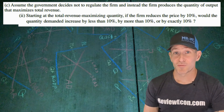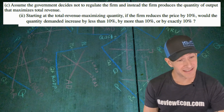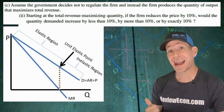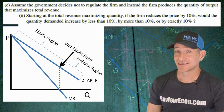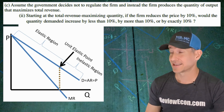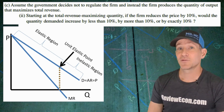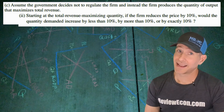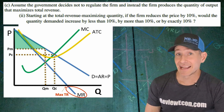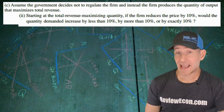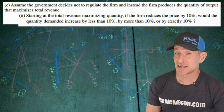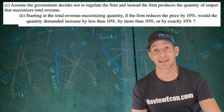For part CII, we are asked if the firm reduces price by 10%, whether quantity demanded will increase by less than 10%, more than 10%, or exactly 10%. We have to remember the three areas of the demand curve based on the marginal revenue curve: when MR is positive we have elastic demand; when MR is zero that is the unit elastic point; and when MR is negative that is the inelastic range. Beyond the total revenue maximization point we have negative marginal revenue, meaning we have entered the inelastic range of the demand curve. With inelastic demand, the percentage change in quantity is less than the percentage change in price, giving a coefficient less than one. So the answer is less than 10%.